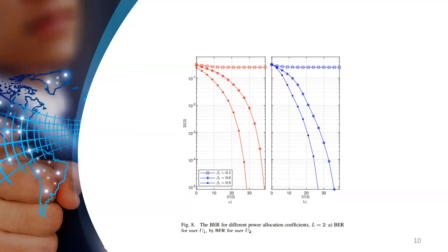This figure shows the bit error rate with different values of the power allocation coefficients, and it can be seen from this picture that if the power coefficients or if the total power is equally divided into the two users,